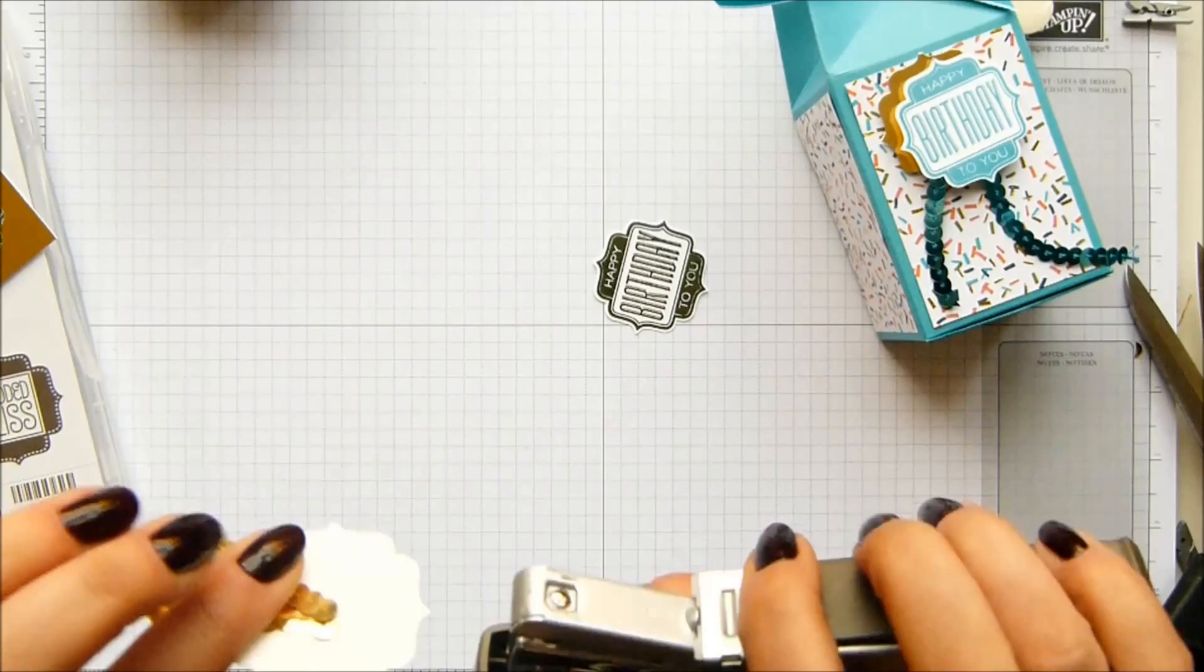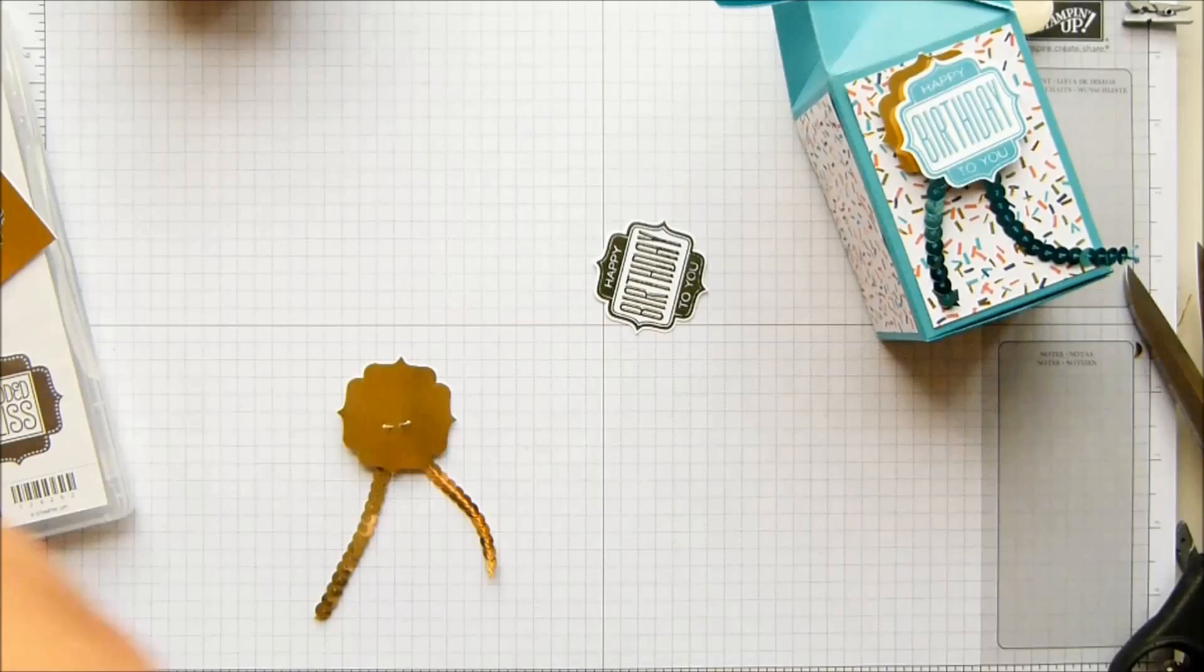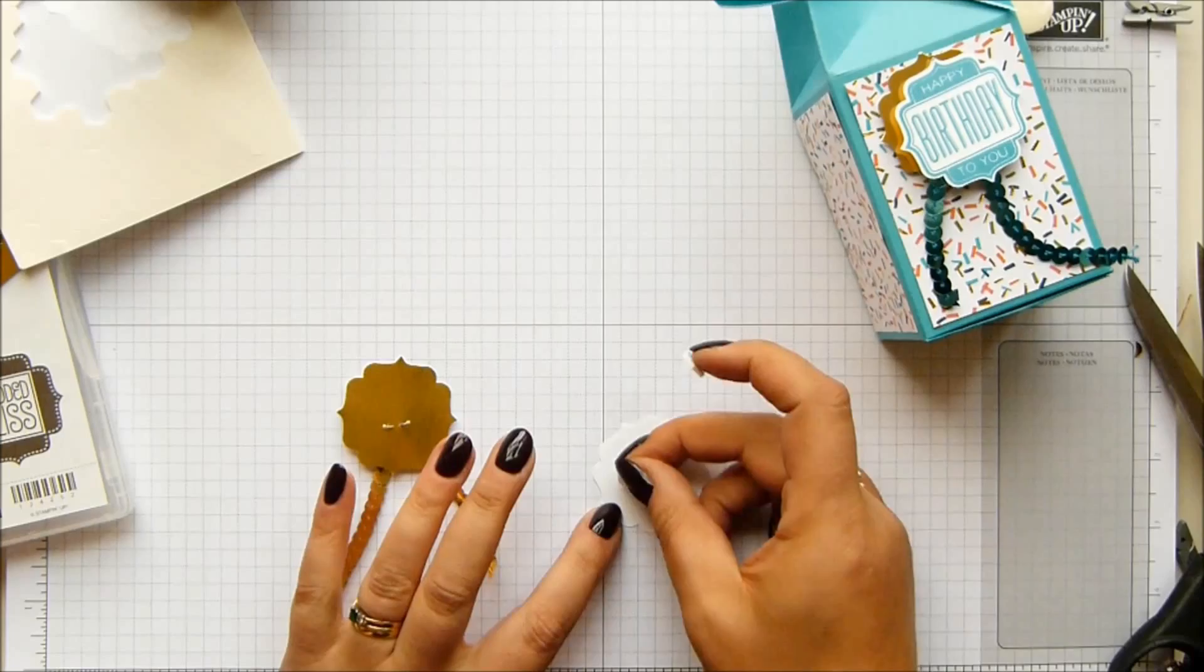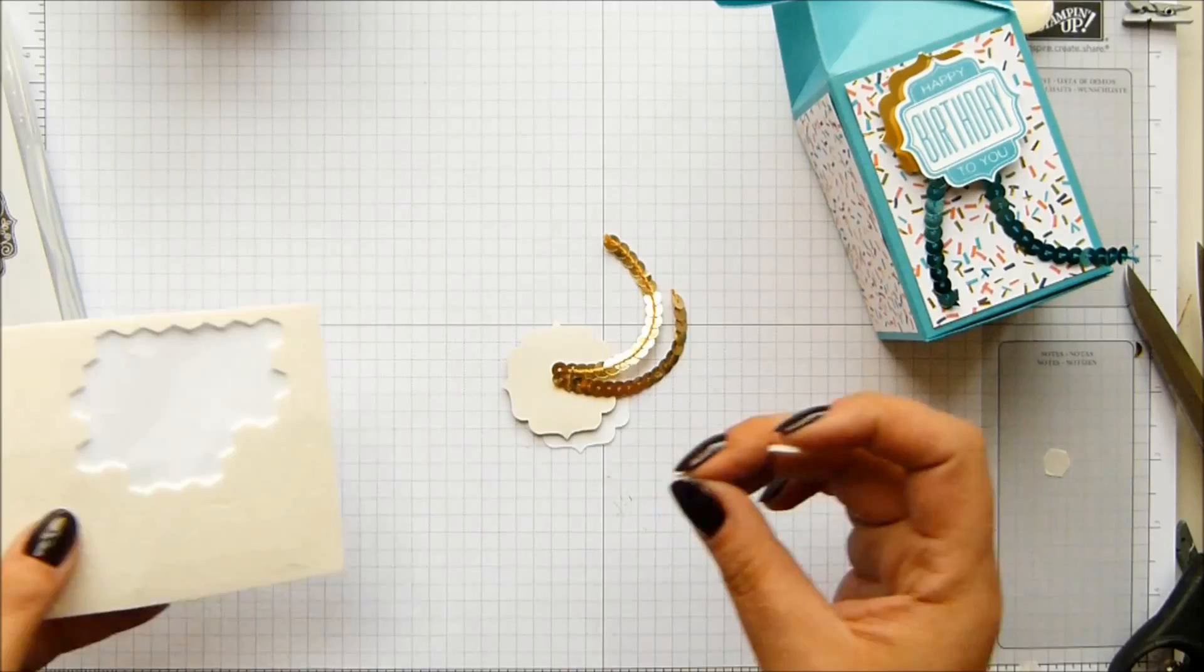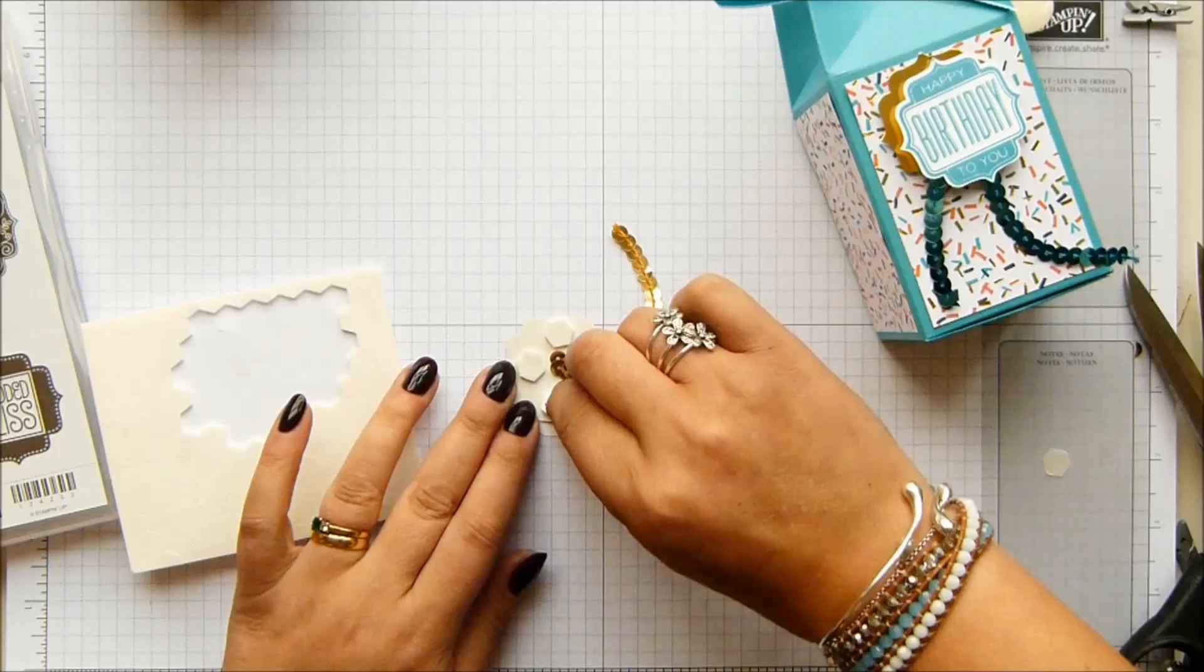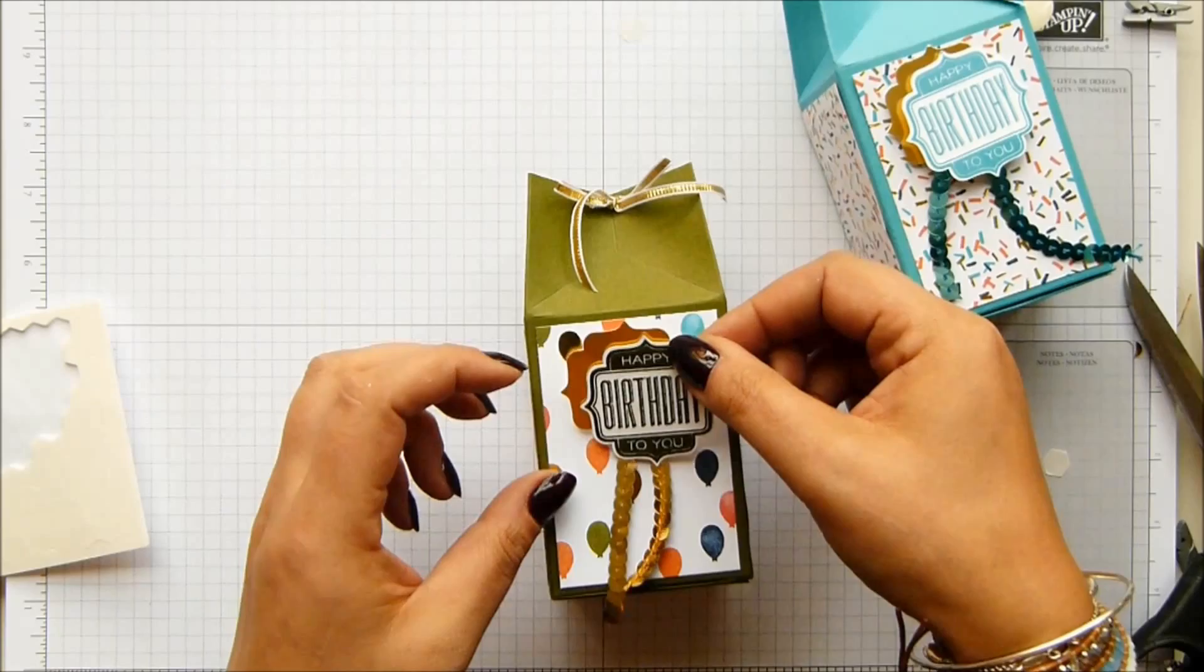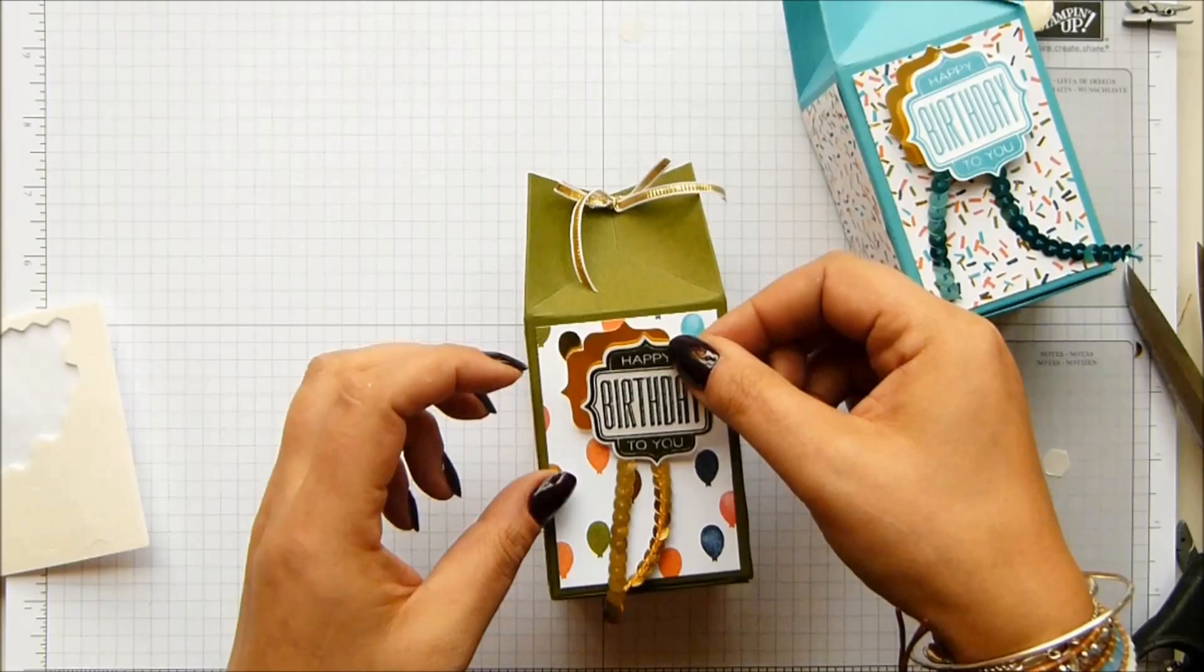That's attaching that to that. We're going to have some dimensionals. I'm going to take a couple onto the back of this bit. Offset it a little so you still get the gold background. I need to put some dimensionals on there because the sequins have added weight and depth to it. Then pop that on the front and that's the box done.